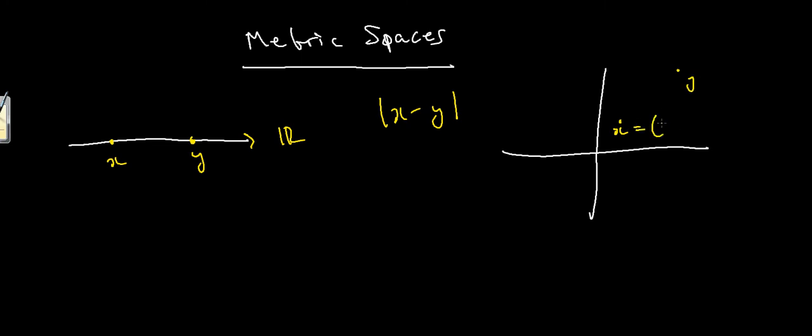And let's say that this point is equal to x1, x2 and this point is equal to y1, y2. So how do we now find the distance between x and y in this case?